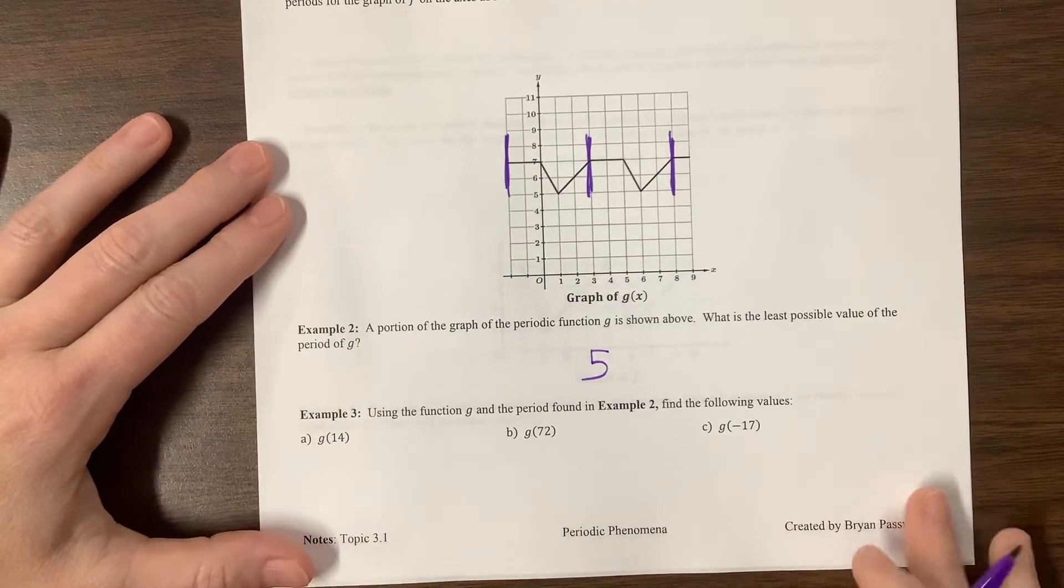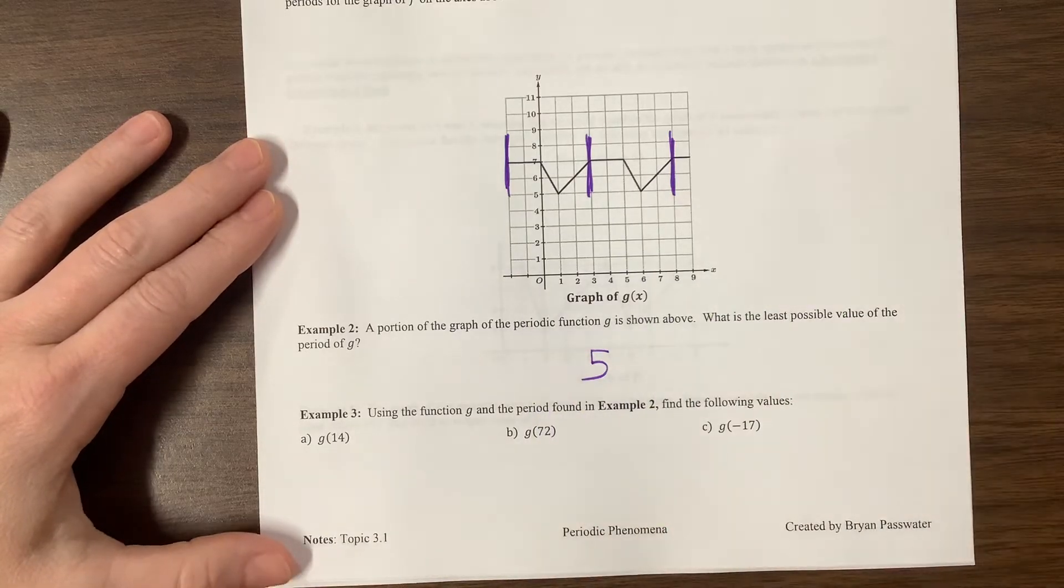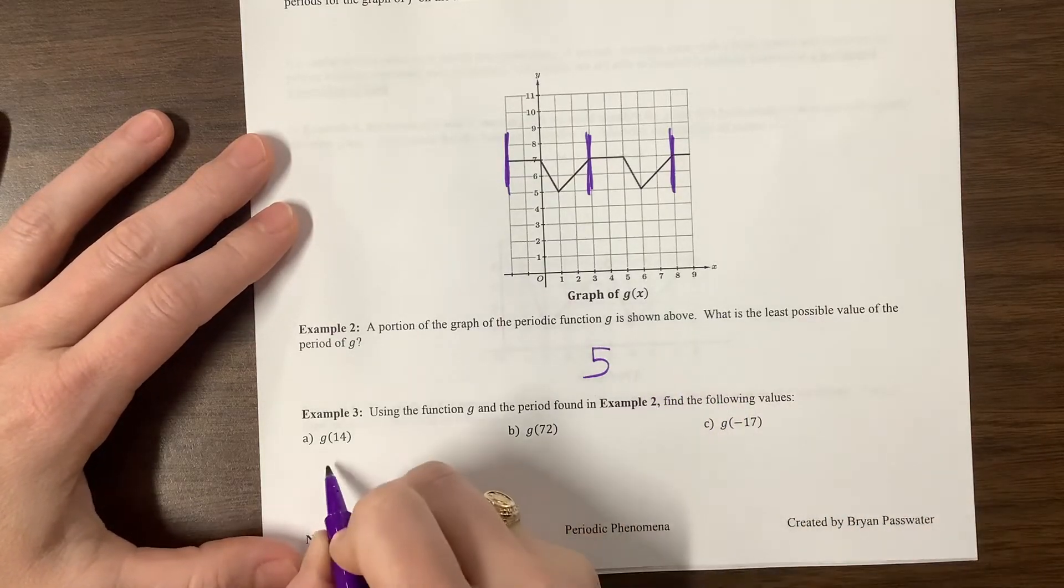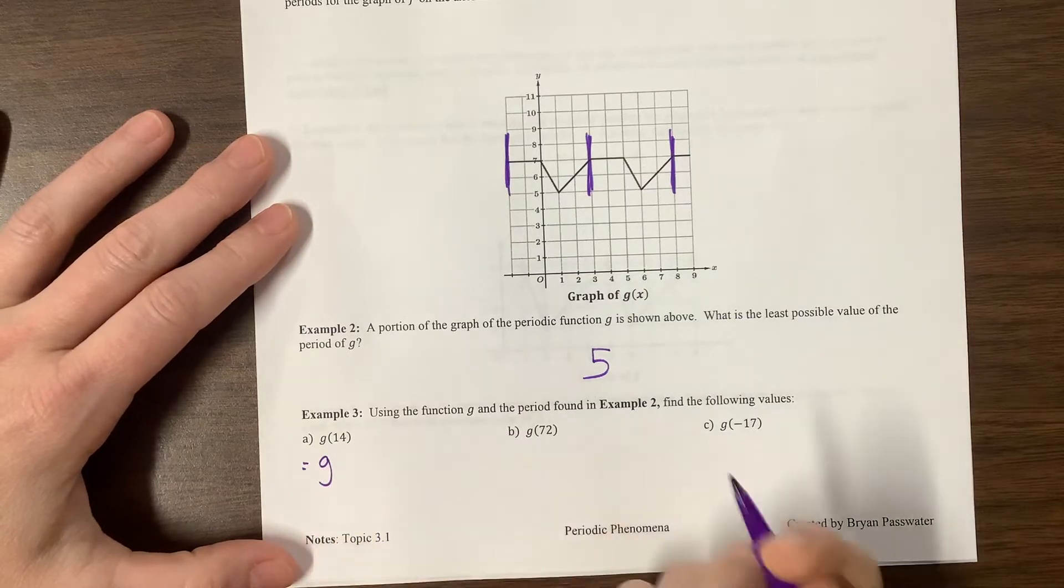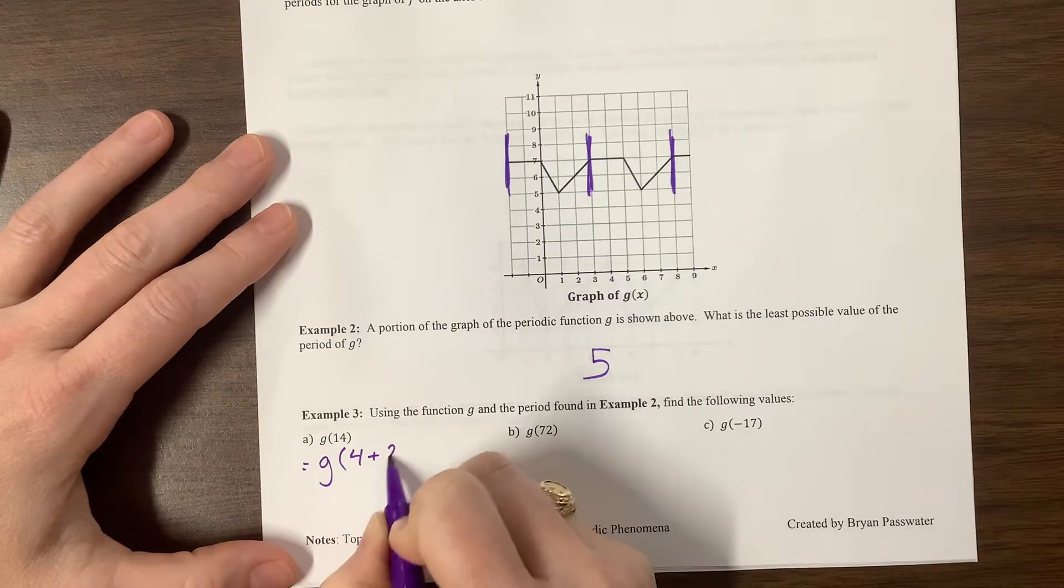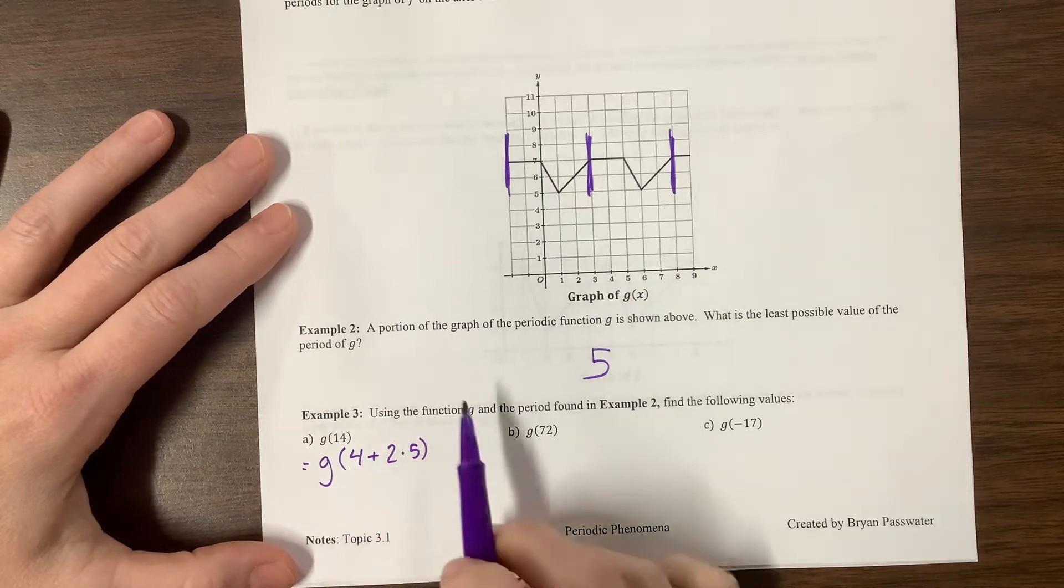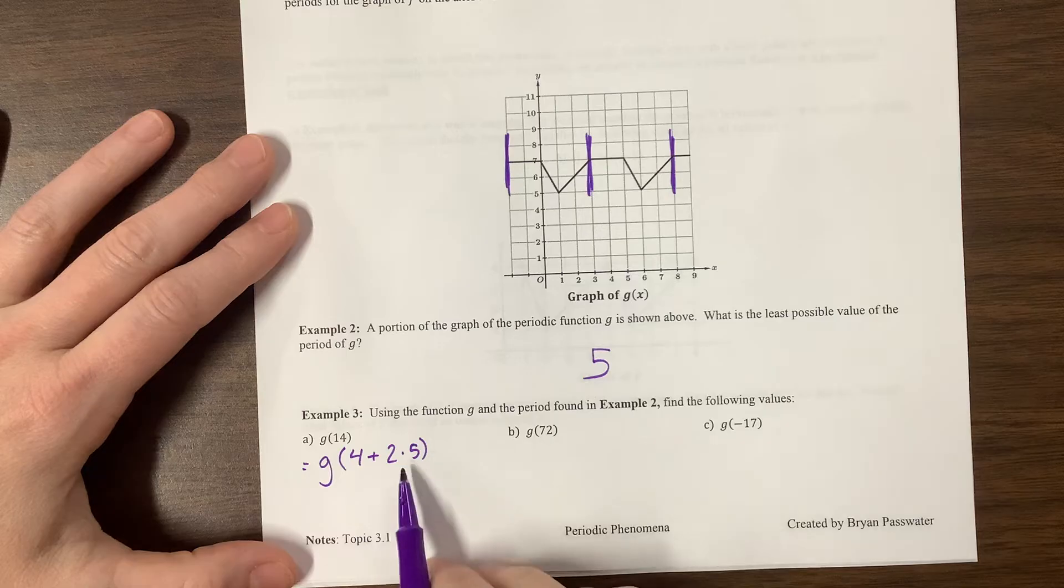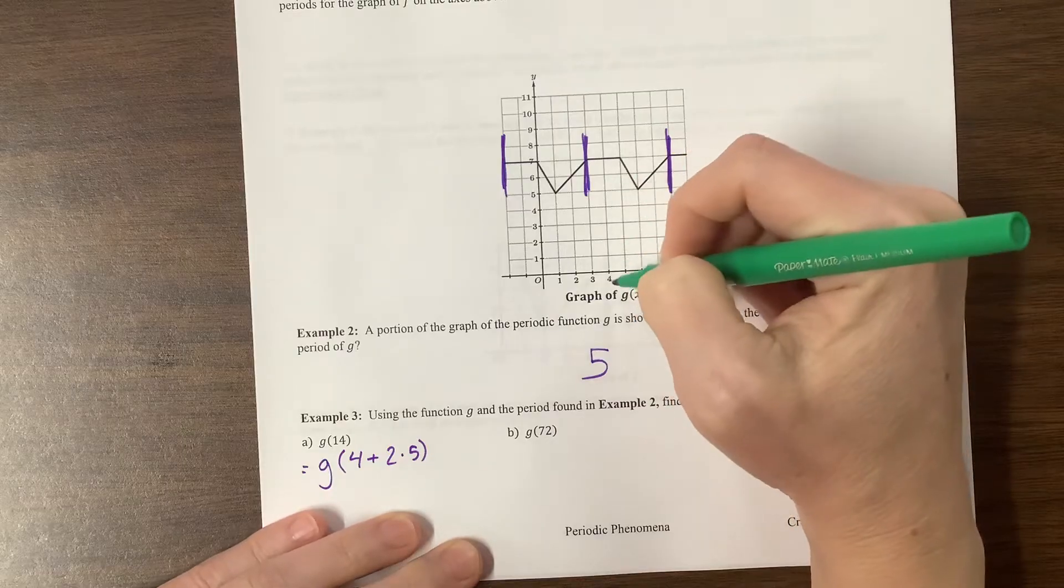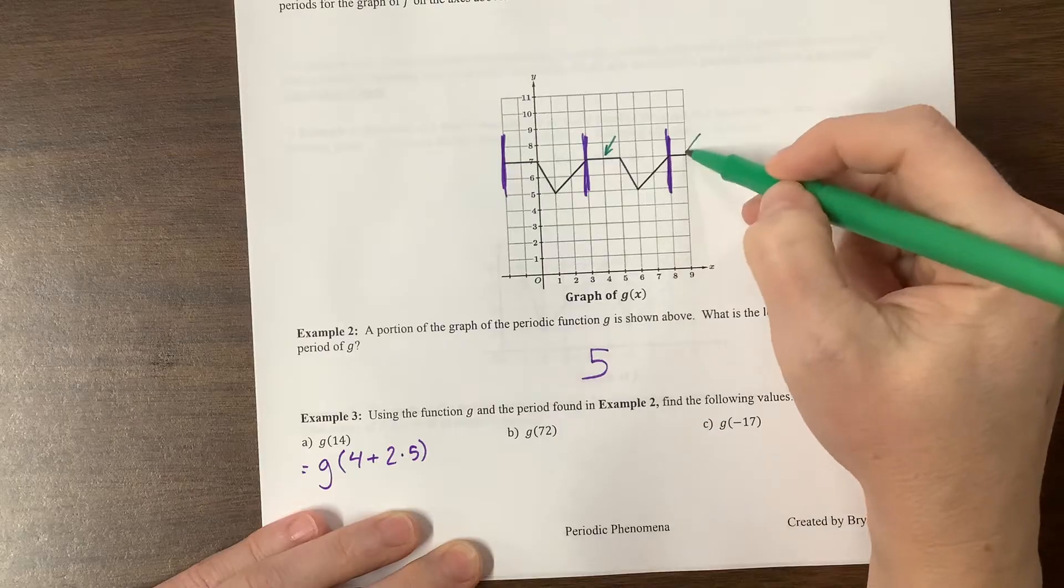So then they want us to say, well, how do we evaluate these other things without drawing out all the way out to where x is equal to 72? So one way to think about this is we can, I keep doing this different ways. Every time I do a different problem, I do it a different way. This would be 4 plus 2 times 5. And so what this is saying is whatever happened at 4, it's going to happen again at, because their period is 5, whatever happens at 4, you know what, let me get a new color. What's happening at 4, we're right here. Well, that's going to happen again 5 units later at 9. Sure enough, it does.